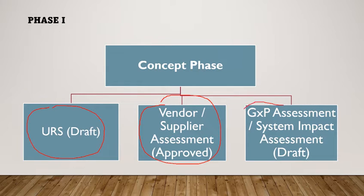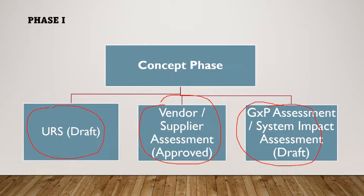Next, we need to perform the GXP assessment. This document identifies the GXP impact and which GAMP category the software falls into — category 1, 3, 4 or 5. It also evaluates and justifies whether the system is required to follow the electronic records and electronic signature requirement mentioned in 21 CFR Part 11 regulation. Based on all these documents, you can have a basic idea of the system, which will help you validate the system and initiate the in-house change control procedure to implement the system.